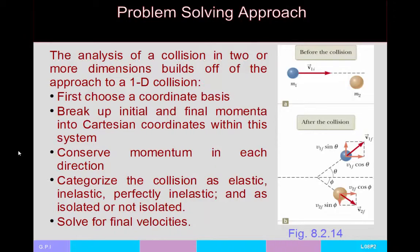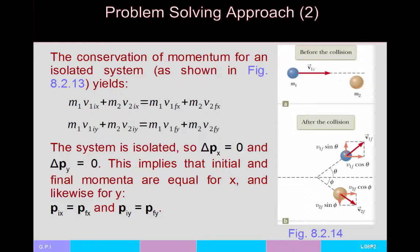For a 2D momentum problem-solving approach: choose a coordinate basis, break initial and final momenta into Cartesian components, then conserve momentum in each direction separately. The x-component of initial momentum equals x-component of final momentum, and likewise for y. For an isolated system with no walls, the change in x-momentum should be zero and the change in y-momentum should be zero.